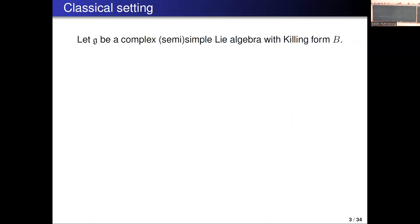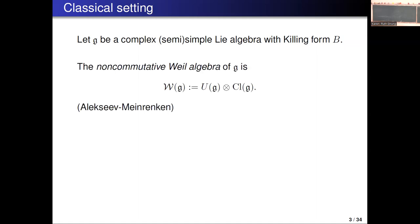Let's first review quickly the classical setting for the cubic Dirac operator. So G will be a complex simple or semi-simple Lie algebra with Killing form B. The non-commutative Weil algebra of G, W of G, is U of G tensored with the Clifford algebra of G — the Clifford algebra with respect to this form B. The completely classical thing would be just the Weil algebra, S of G star tensored with wedge of G star.